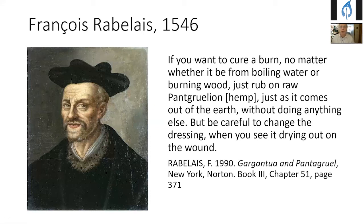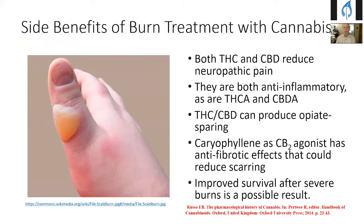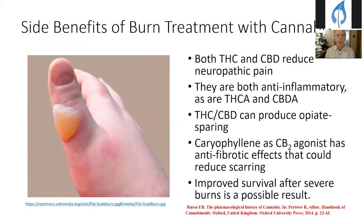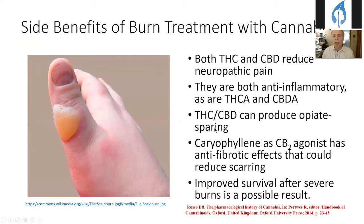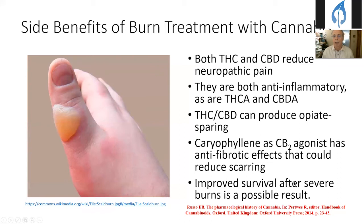Jumping to France in the 16th century, Rabelais referred to pantagruelion — his nickname for hemp — to treat burns by rubbing it on and keeping the area covered. We know there are many reasons this would be helpful. Both THC and CBD reduce neuropathic pain, which is the problem in burns. Both are anti-inflammatories, as are the raw acid cannabinoids THCA and CBDA. THC and CBD can produce opiate-sparing when used to treat pain. Another terpenoid component of cannabis, caryophyllene, is a CB2 agonist and strongly anti-fibrotic, which could reduce scarring associated with burns — and it's possible cannabis use in severe burns may increase survival.